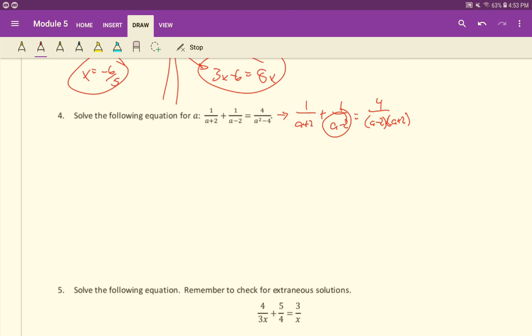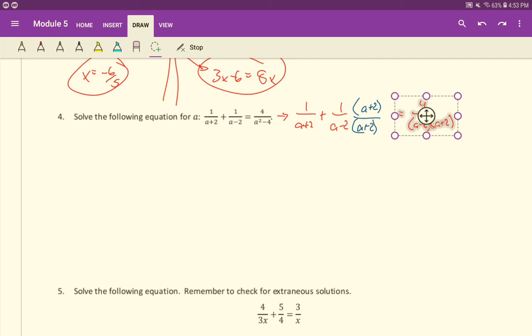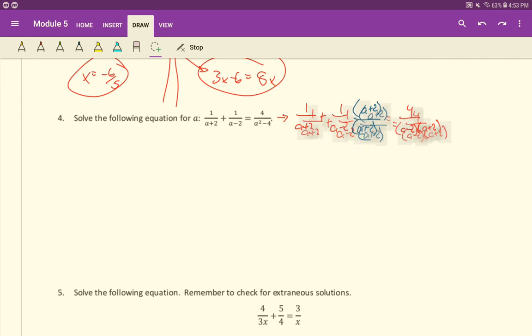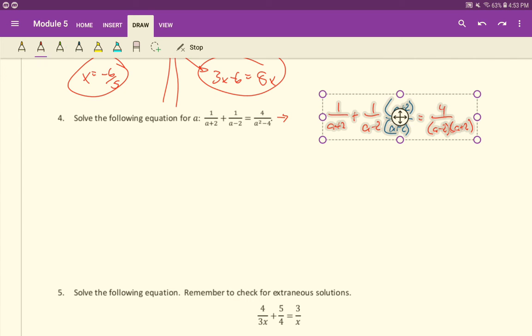However, what is this denominator missing? What factor is it missing? It doesn't have the a plus two. So what we'll do is multiply the top and bottom here by an a plus two over an a plus two. And then likewise here, what is this denominator missing? It's missing the a minus two. So we will multiply it by a minus two over a minus two.